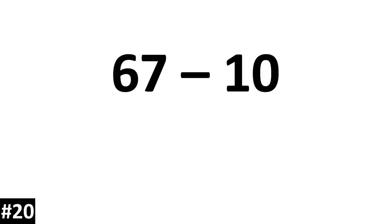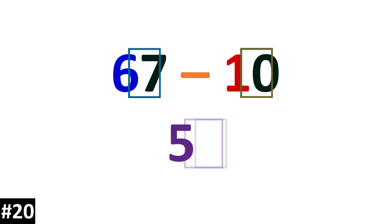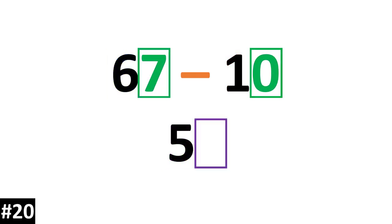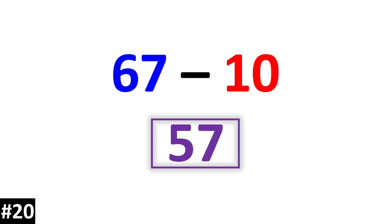67 minus 10. 6 10s minus 1 10 is 5 10s. 7 minus 0 is 7. So our answer is 57.